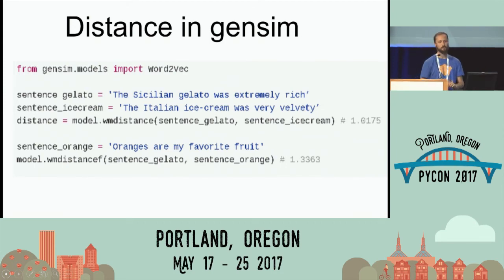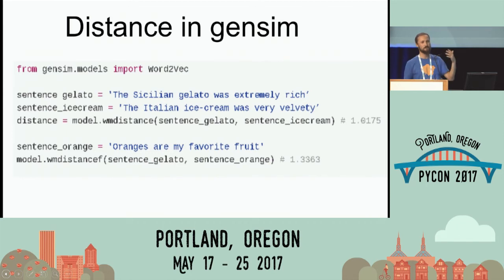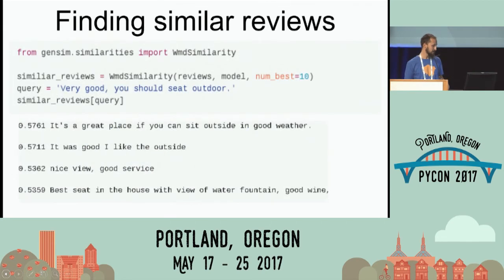This is the GenSim API for that — just one line to calculate the distance between the gelato sentence and the ice cream sentence. That turns out to be 1.01. If I try something random — 'the oranges are my favorite fruit' — that sentence is further apart from any ice cream sentence: 1.33, a little bit further apart.